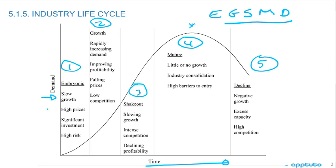Embryonic is slow growth, high prices, significant investment, and high risk. Some of this is common sense: an industry is just starting, so it's high risk, there may be failure, significant investment is needed to get up and running, high prices because it might be a new item, and slow growth because it's just starting.